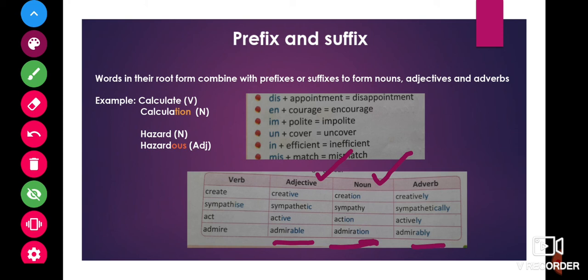When we add the suffix l-y, admirably becomes an adverb. So, in this way, words in their root form combine with prefixes or suffixes to form nouns, adjectives and adverbs.